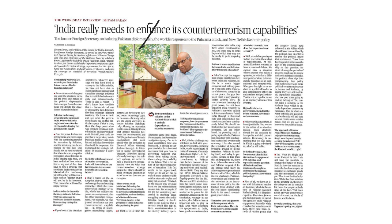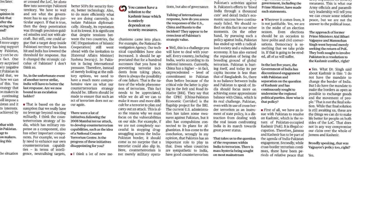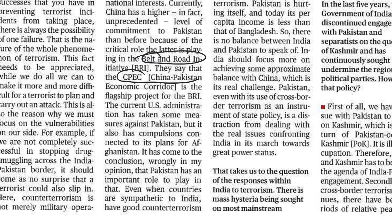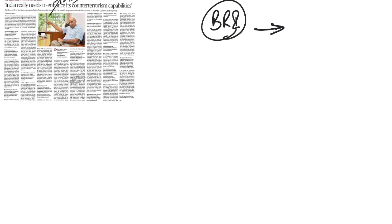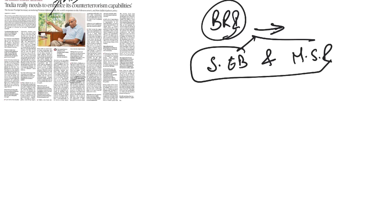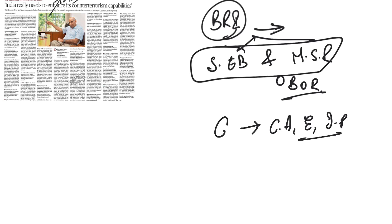The next article: 'India Really Needs to Enhance Its Counter-Terrorism Capabilities,' under GS Paper 2, International Relations. Two concepts: Belt and Road Initiative (BRI) and China-Pakistan Economic Corridor (CPEC). BRI was announced by Chinese President Xi Jinping — China's most ambitious economic initiative. It calls for building a Silk Road Economic Belt and a 21st Century Maritime Silk Road. Together these are referred to as One Belt One Road — the largest development plan in modern history — connecting China with Central Asia, Europe, and Indo-Pacific littoral countries.